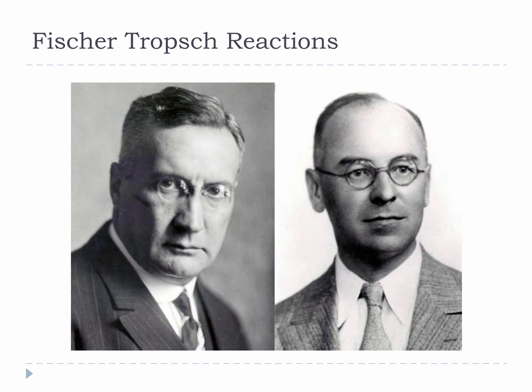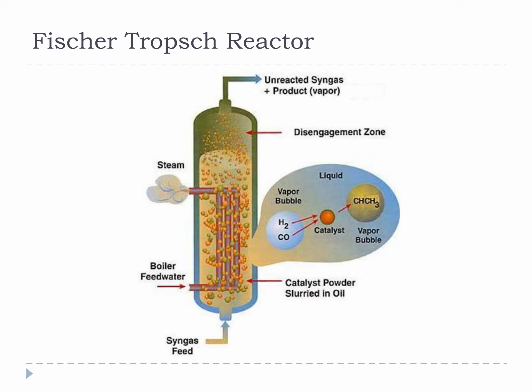This reaction was invented by Franz Fischer and Hans Tropsch in 1920. It is basically a transition metal catalyst reaction that converts syngas into liquid hydrocarbons. The Fischer-Tropsch reaction requires fairly high temperatures and pressures. The process is operated in the temperature range of 150 to 300 degrees Celsius and the pressures are in the range of 200 to 600 psi.